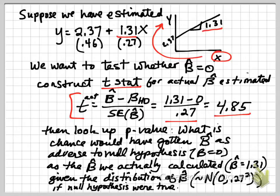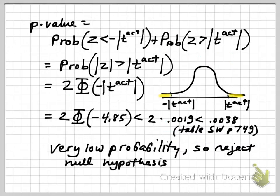On the other hand, if the chance of calculating something as adverse to the null hypothesis — as far away from 0 — is actually very, very small when we look it up in the normal table, then we say the chances of calculating that were tiny, so it probably tells us the null hypothesis isn't true — that β is not actually equal to 0. So let's calculate that probability.